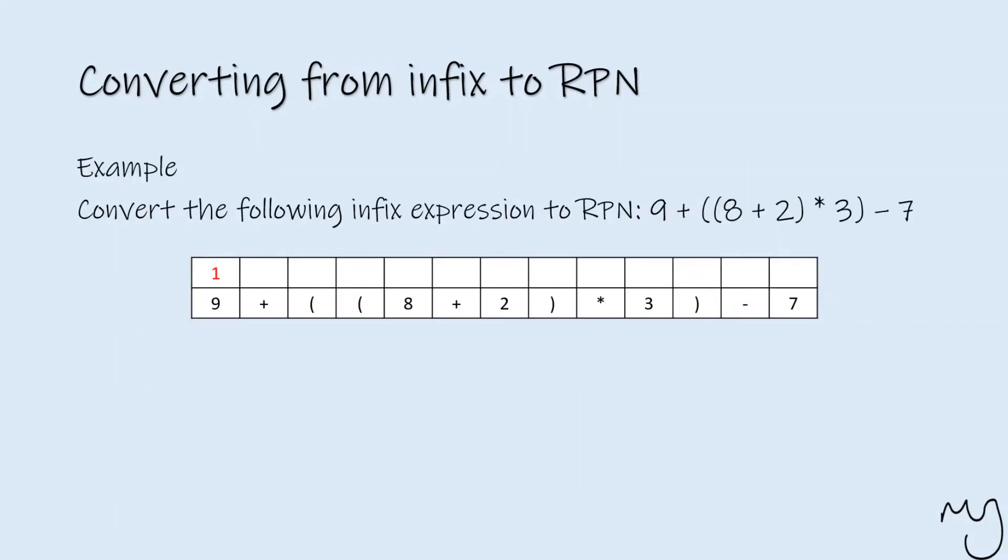If we follow the rules on the previous slide, what you'll spot is that if we number these with regards to the values themselves but also taking into account the order of precedence, we number nine as one, eight as two, two as three, we then use the plus sign as four because they are placed inside of the brackets themselves, before then introducing three as five and that multiplication as six.